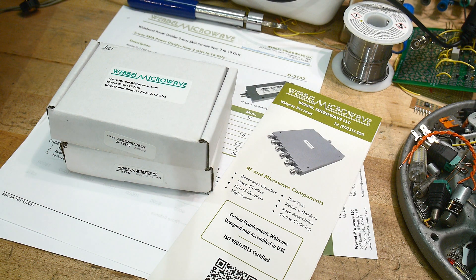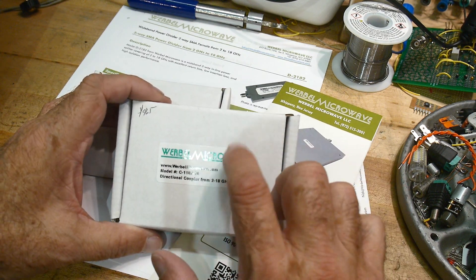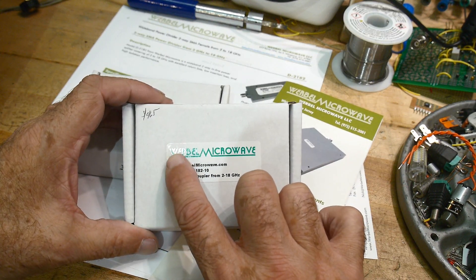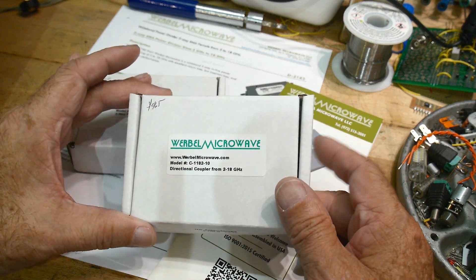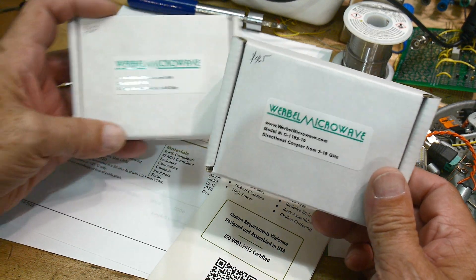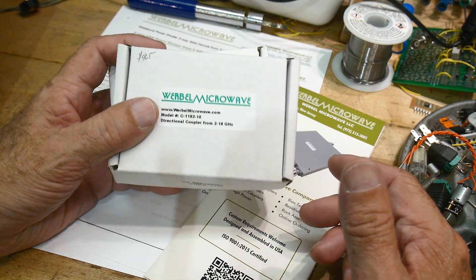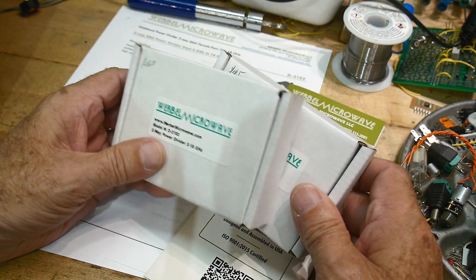All right, what's on the bench today? A company reached out to me, Werbal Microwave. It's pronounced Werbal Microwave, and they're a German company. They said, hey, do you want some stuff? And I said, of course I want some stuff. So they gave me a couple items here: one is a coupler and one is a power divider.